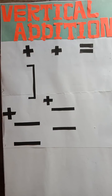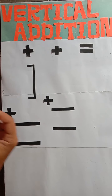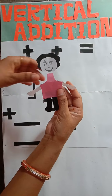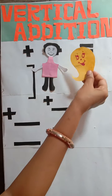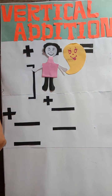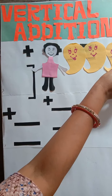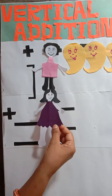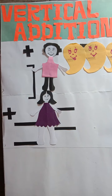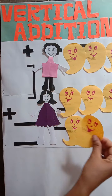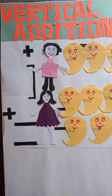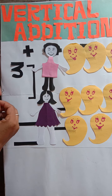So let's solve. This is Pinku. Pinku has three mangoes — one mango, two mangoes, and three mangoes. This is Seema. Seema has five mangoes — one, two, three, four, and five. At first we write here three, and Seema has five mangoes.